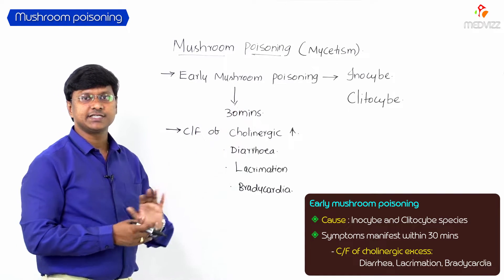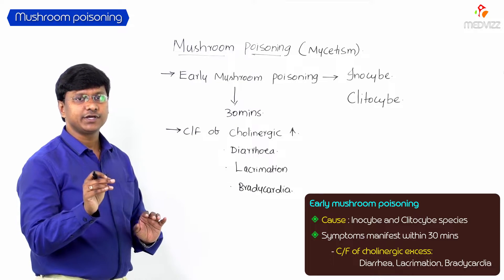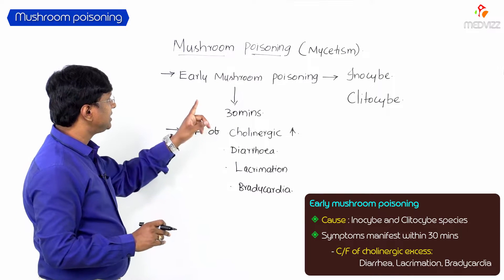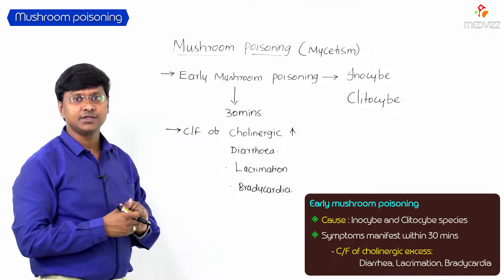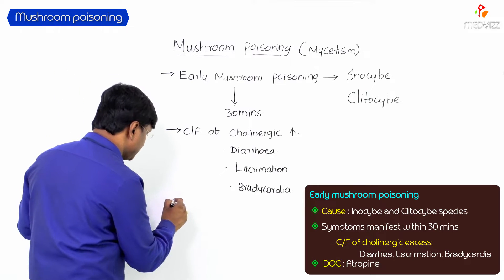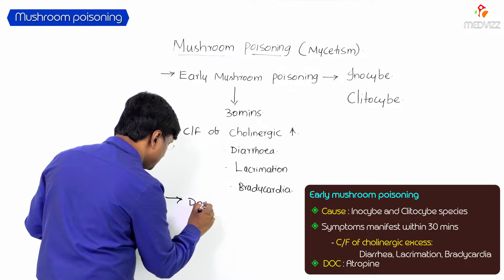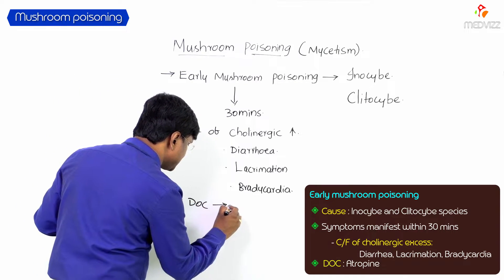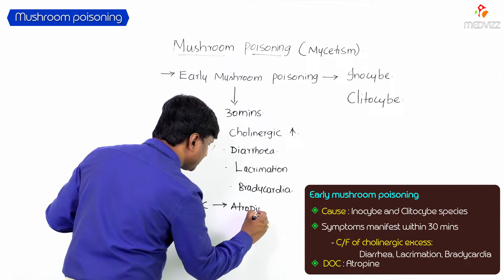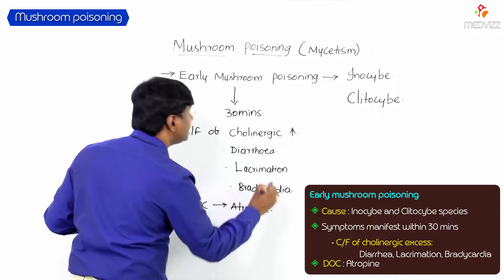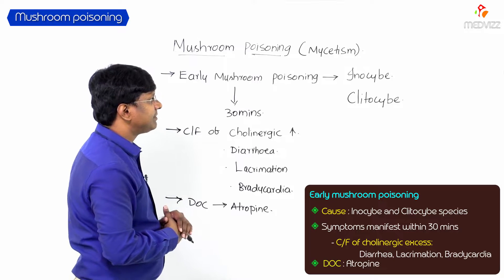Because the clinical features are due to cholinergic excess, the drug of choice in early mushroom poisoning is atropine. Atropine is used for poisoning caused by the Inocybe and Clitocybe species.